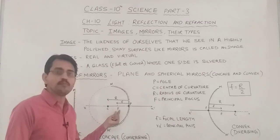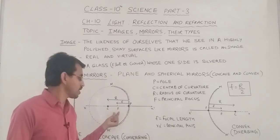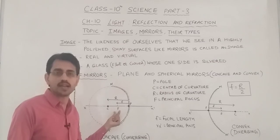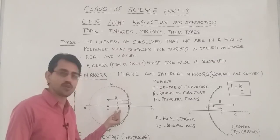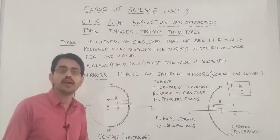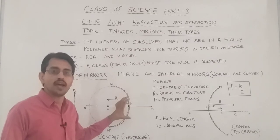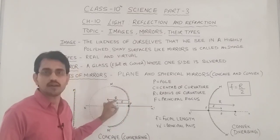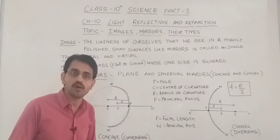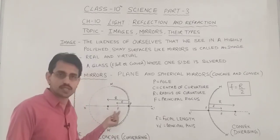There is a point between C (center of curvature) and P (pole) called the principal focus, represented by the letter F. The principal focus is the point where light rays, after reflection from a concave mirror, actually meet. This is called the real principal focus.